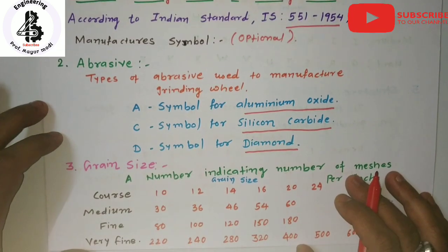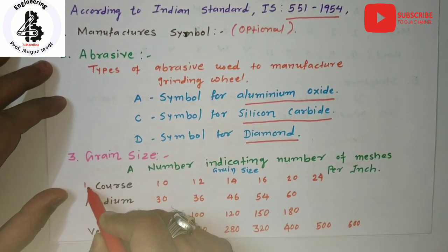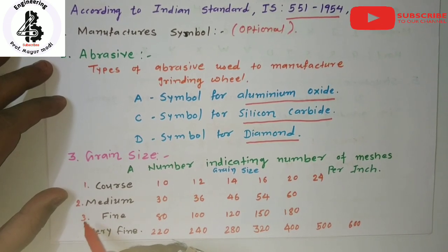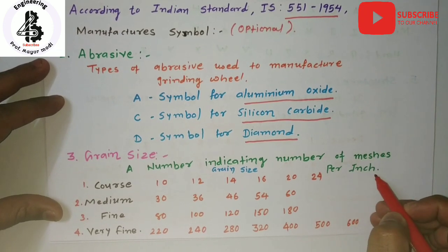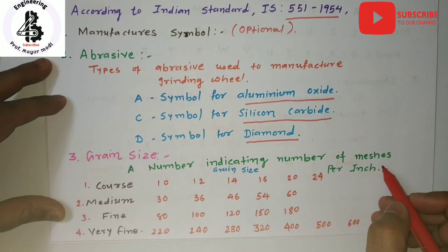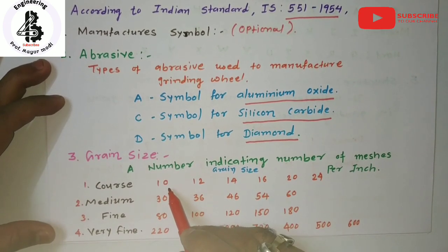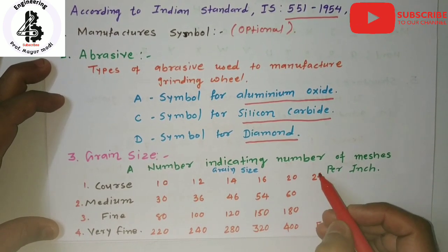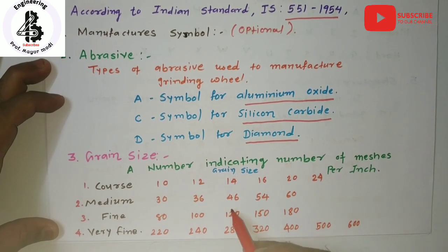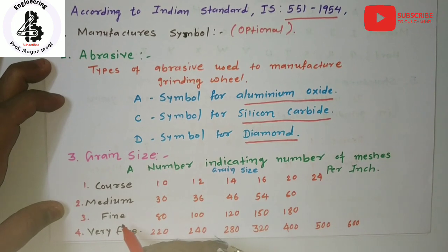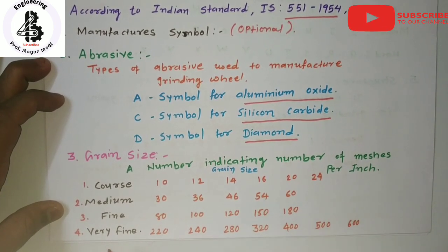The third digit represents grain size. Generally there are four kinds of grain size: coarse, medium, fine, and very fine. The number indicates the number of meshes per inch used to make a grinding wheel. Coarse grain sizes are 10, 12, 14, 16, 20, and 24. Medium grain sizes are 30, 36, 46, 54, and 60. Fine grain sizes are 80, 100, 120, 150, and 180.